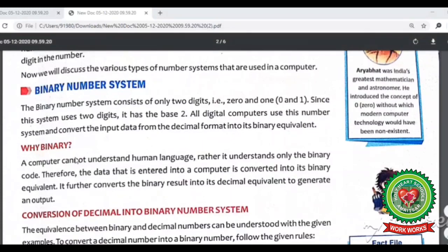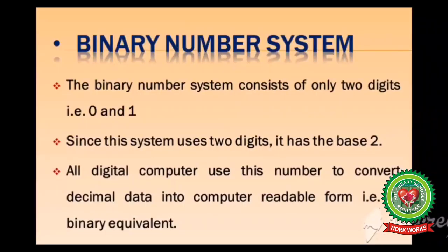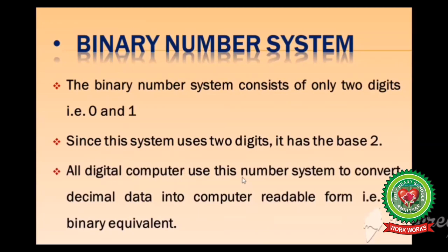The binary number system consists of only two digits, that is 0 and 1. Since this system uses two digits, it has the base 2. All digital computers use this number system to convert decimal data into computer readable form, that is binary equivalent.